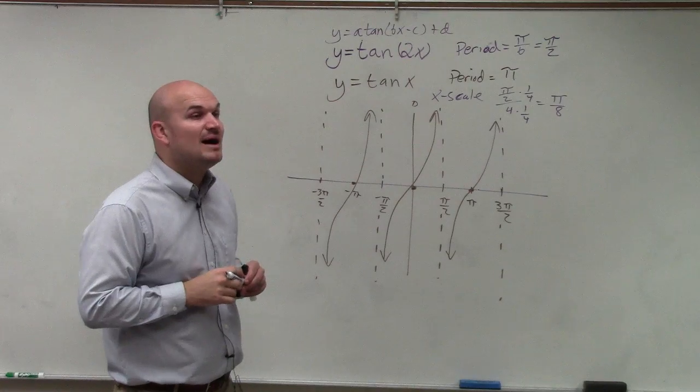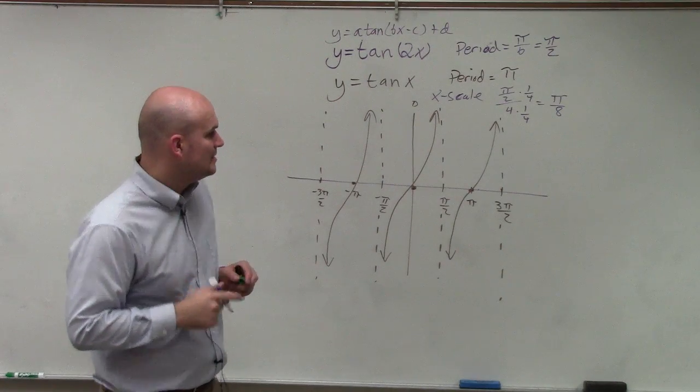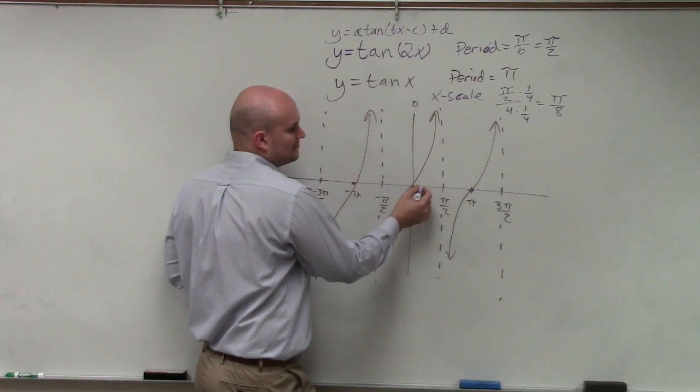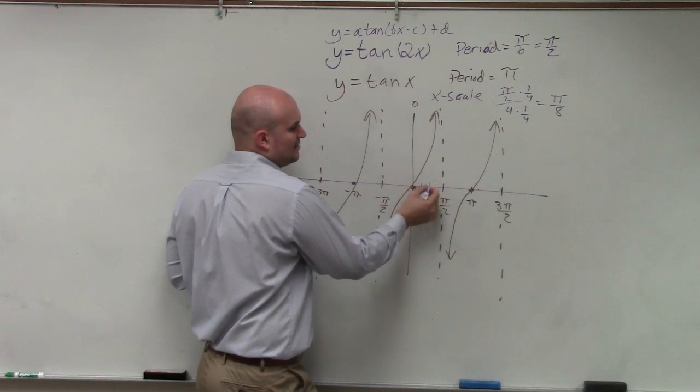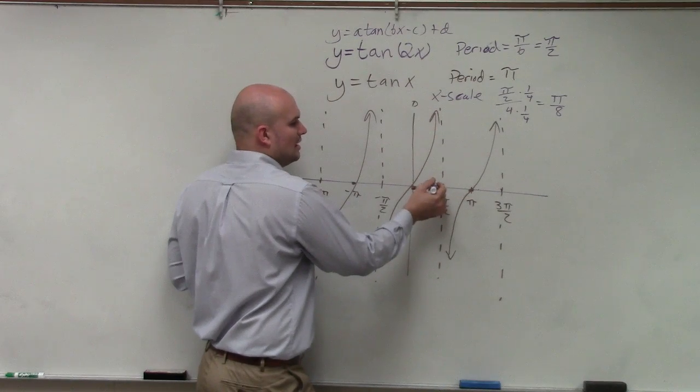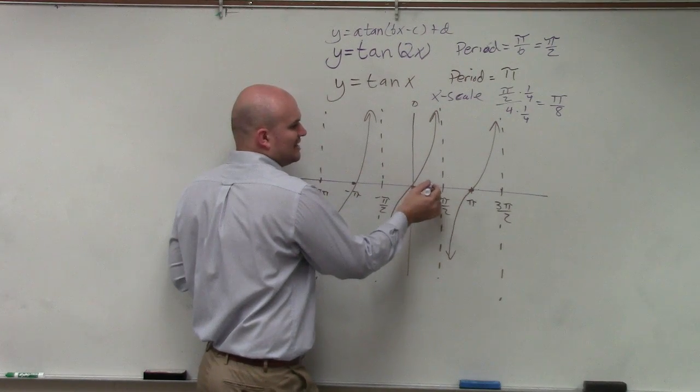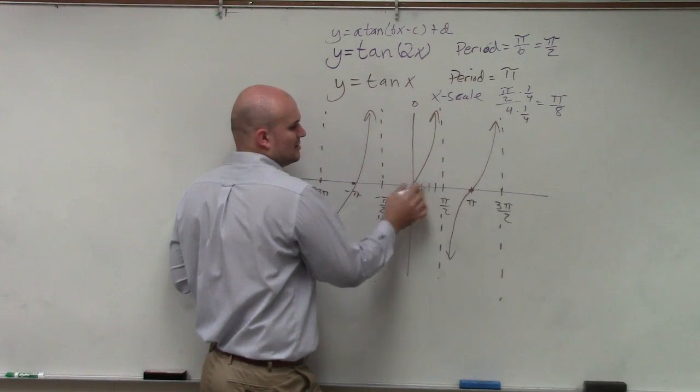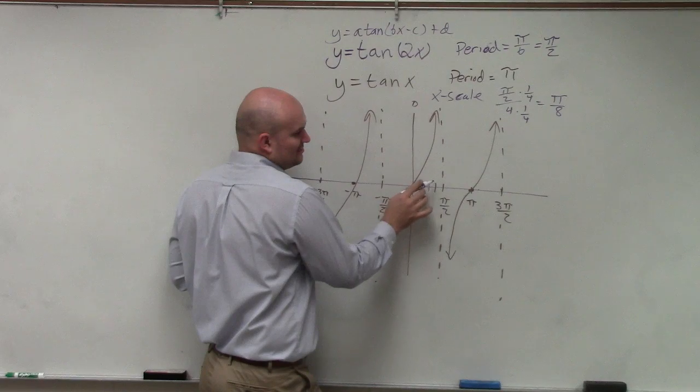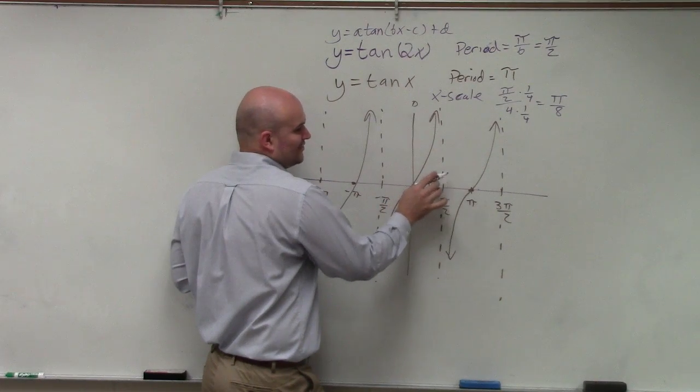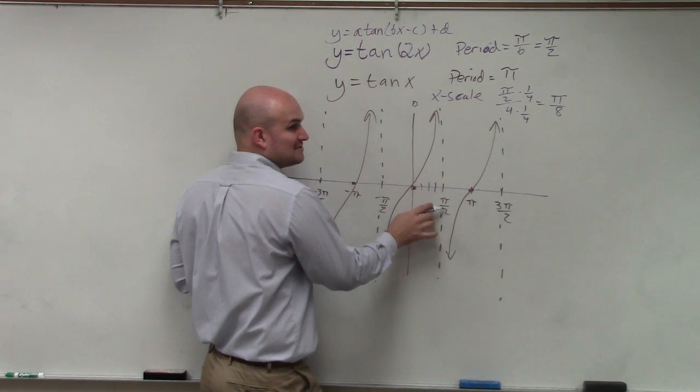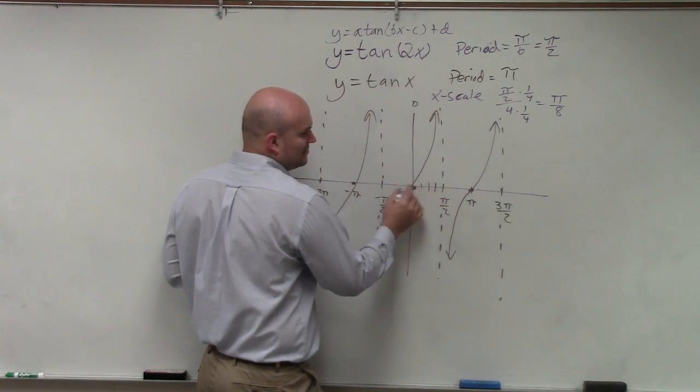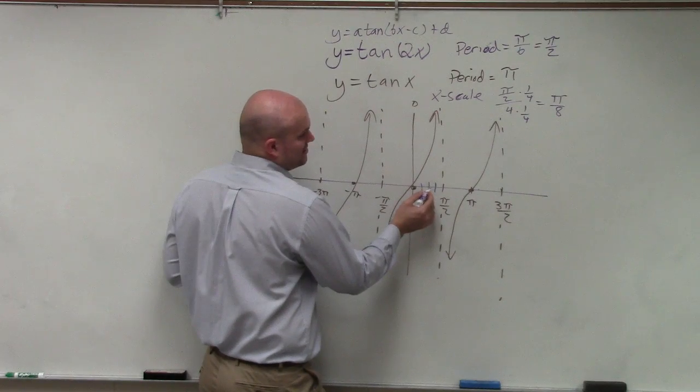So that's going to be pi eighths. So we have pi eighths, pi quarters, 2 pi eighths, 4 pi eighths, 1, 2, 3, 4 pi eighths, which is pi halves, right?